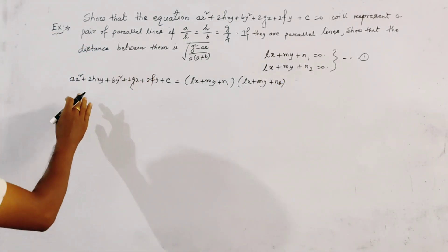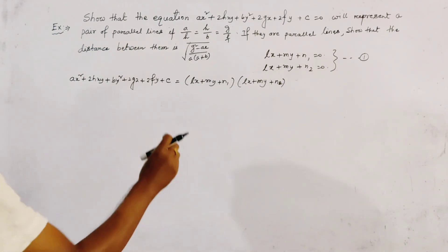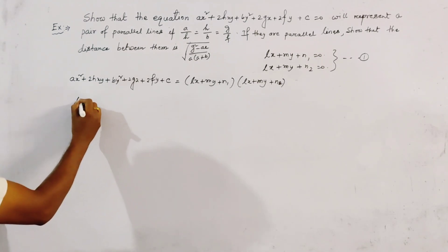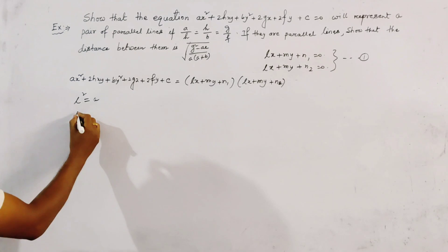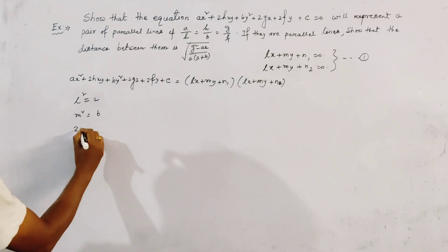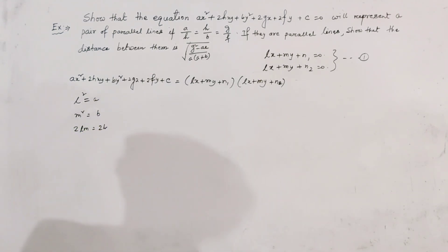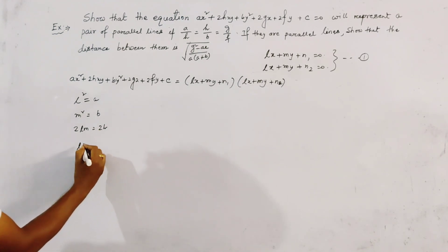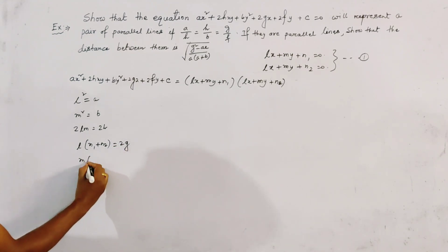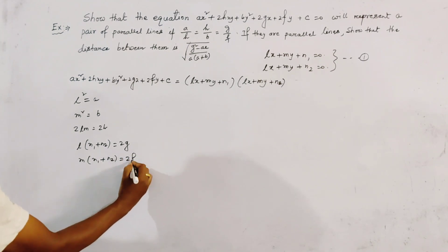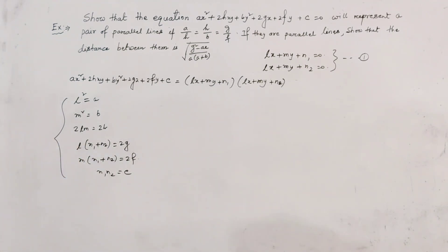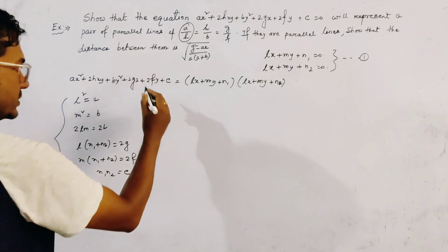Both sides are equal. Now if we compare equal powers of x, y, x², y², x, y, etc., we get the relations: L² = A, M² = B, 2LM = 2H, L(N1 + N2) = 2G, M(N1 + N2) = 2F, and N1·N2 = C. We now start from the relation A/H.